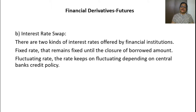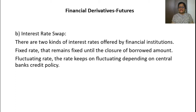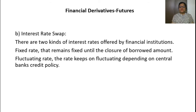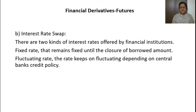There are two kinds of interest rates offered by financial institutions. Fixed rate, which remains fixed until the closure of the borrowed amount. Fluctuating rate, where the rate keeps on fluctuating depending on central bank credit policy.